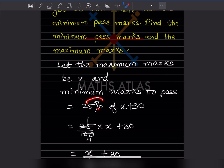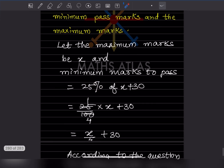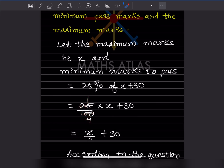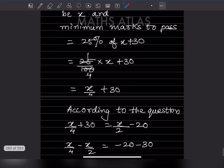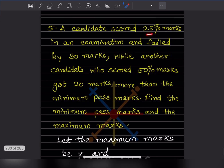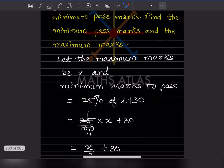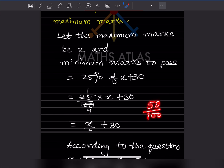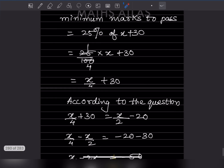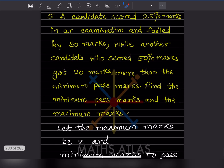The first candidate's score: 25% of x = x/4. Since they failed by 30 marks, minimum pass marks = x/4 + 30. The second candidate scored 50% of x = x/2, which is 20 more than the minimum pass marks, so minimum pass marks = x/2 − 20. Setting up the equation: x/4 + 30 = x/2 − 20.